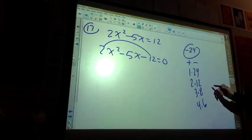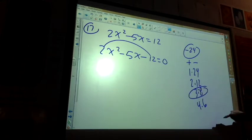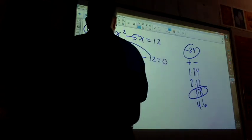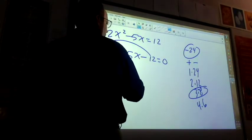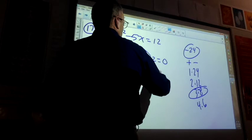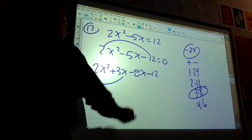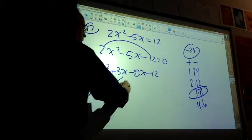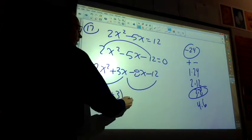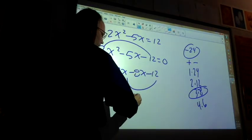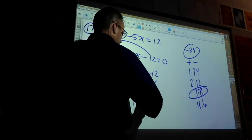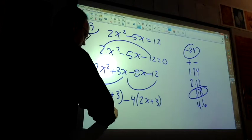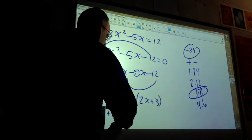So I'm going to get 2x squared plus 3x minus 8x minus 12. So what do I have in common there? X. What do I have in common here? Negative 4. Good. 2x and both those signs need to change. So I get 2x plus 3 and x minus 4.